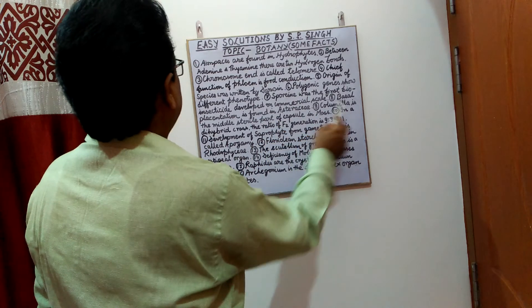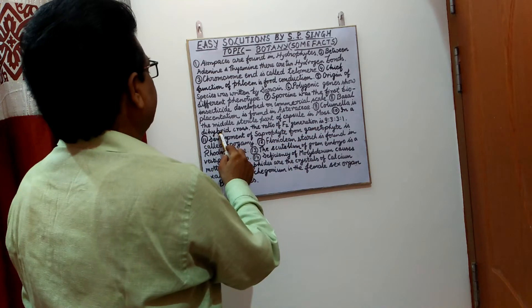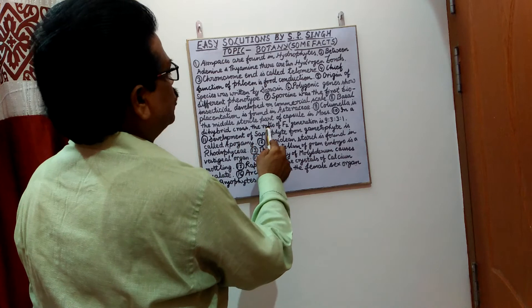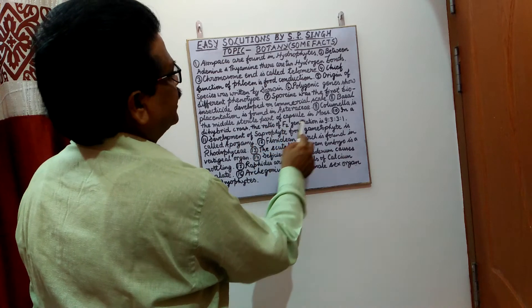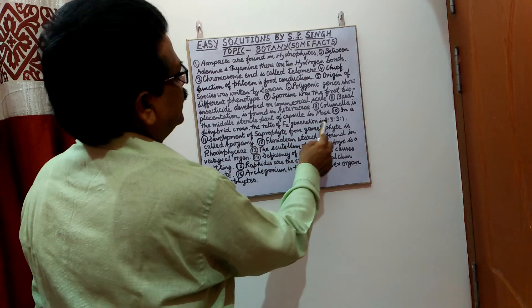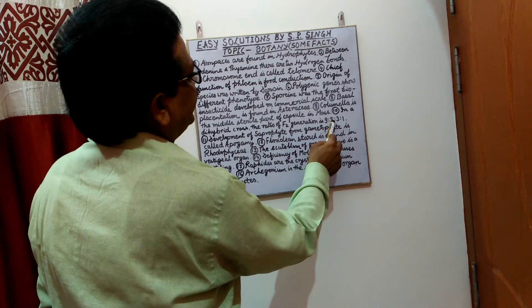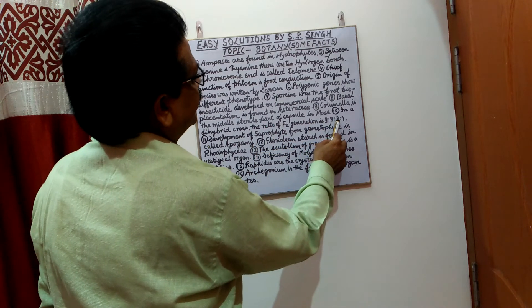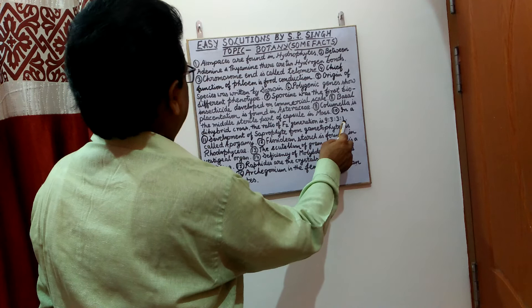In a dihybrid cross, the ratio of F2 generation is 9:3:3:1.